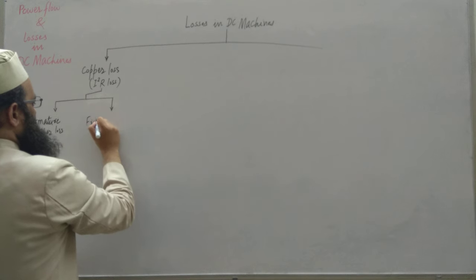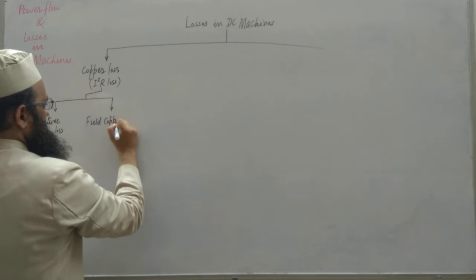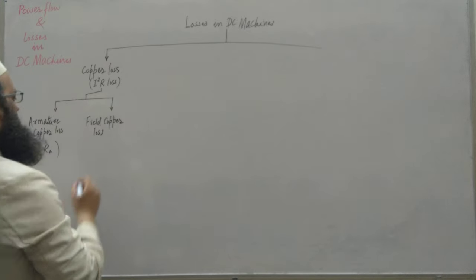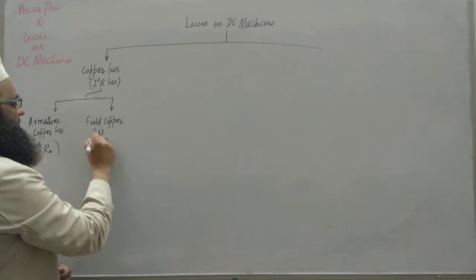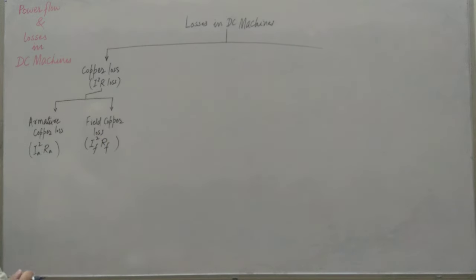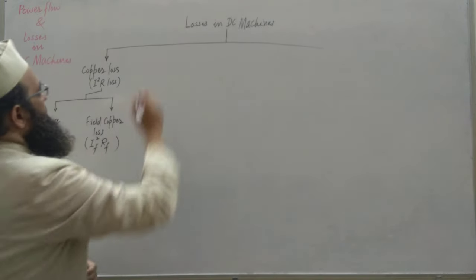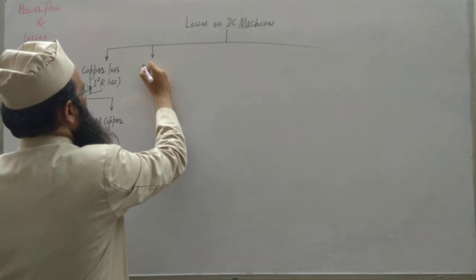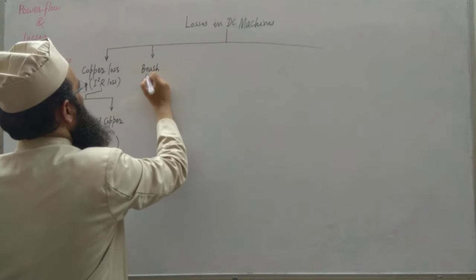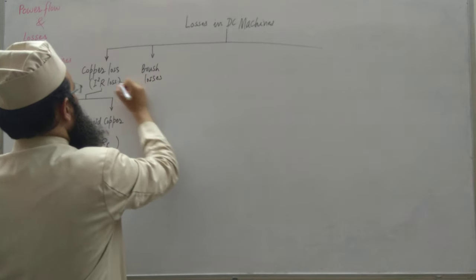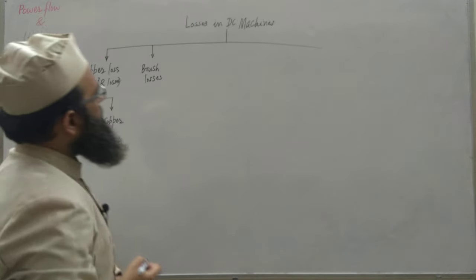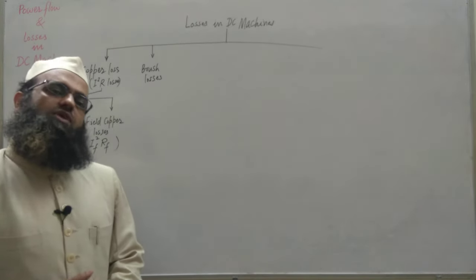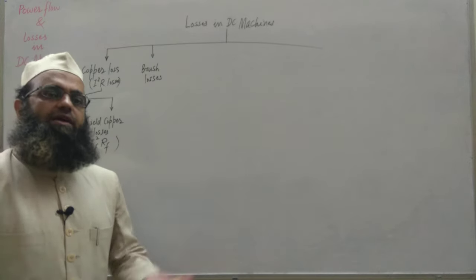The second is field copper loss. If we represent field current by If and field resistance by Rf, then this loss will be If²Rf. We also have brush losses. We know that armature current Ia passes through the brushes in a DC machine.